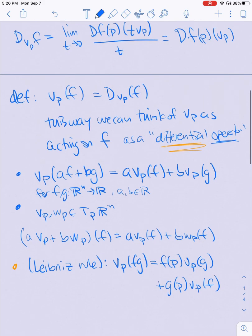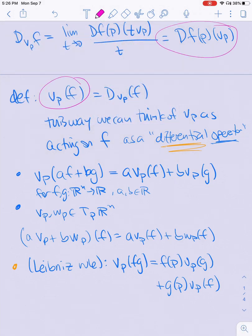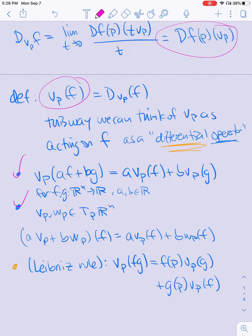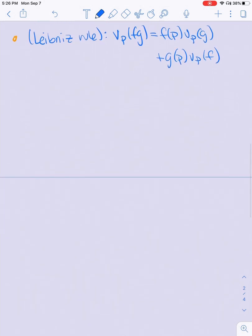If I want to prove that these three things are true just using the fact that v_p is equal to the linear transformation df at p applied to v_p will give me the first and the second, but how do I get the third?